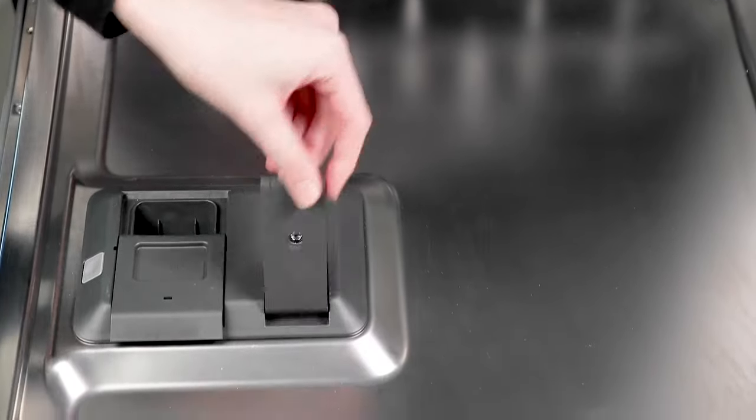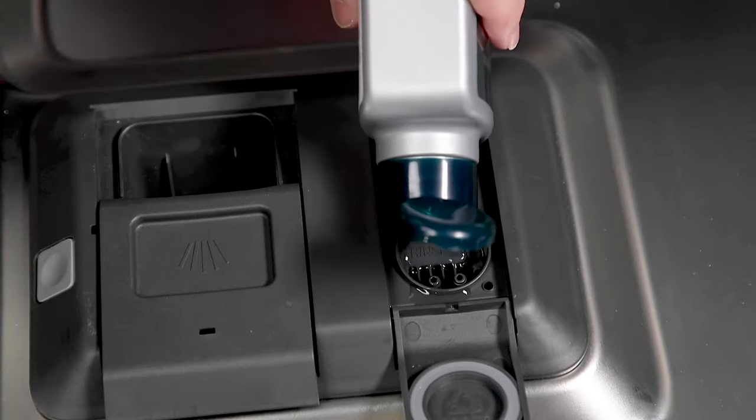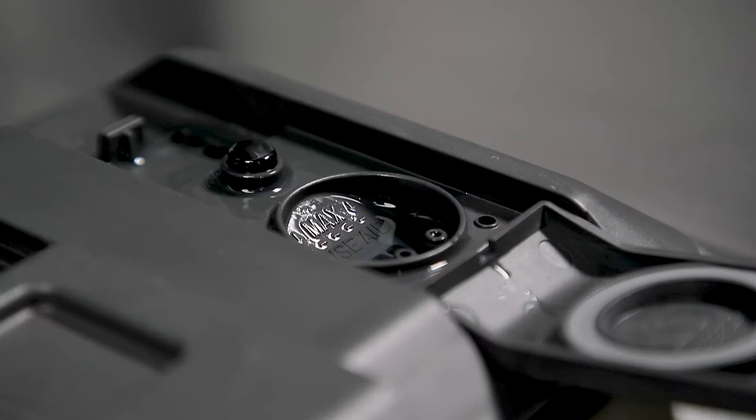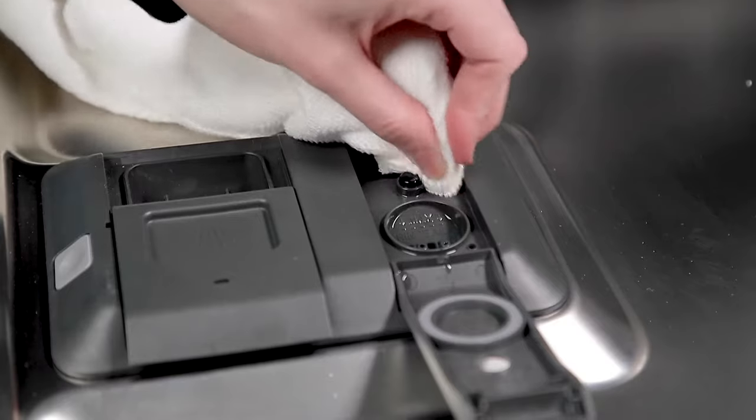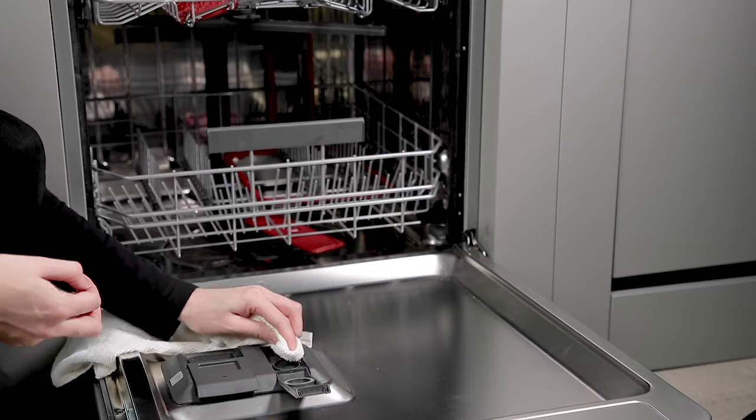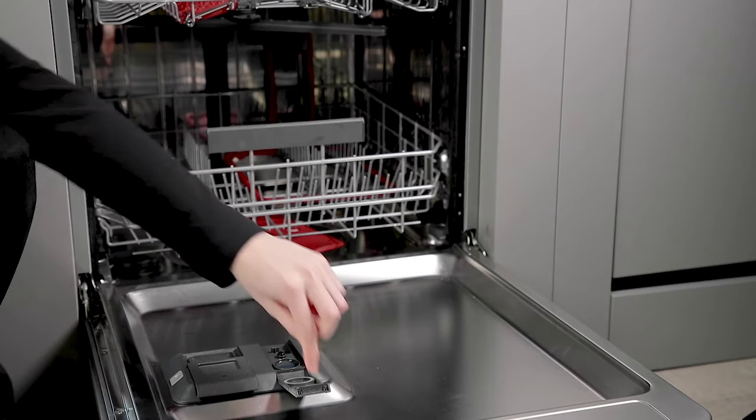To do this open the lid and pour in the dishwasher Rinse Aid until it reaches the marking max. Wipe up any spillages as this will avoid foaming. Then replace the lid and make sure it locks back into position.